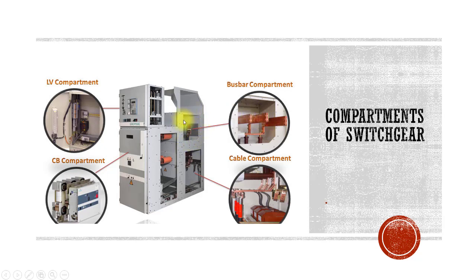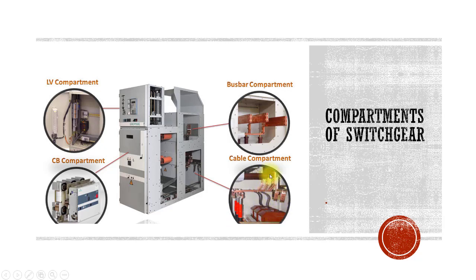On the back side you can see this is the busbar compartment. The busbar compartment looks like this. Coming down further, you will see this is the cable compartment. Cable entry is from the bottom in MV switchgear.